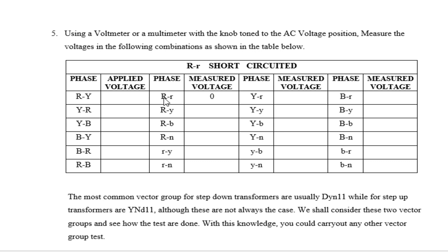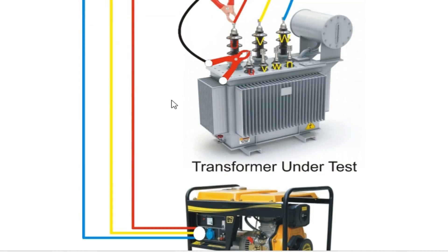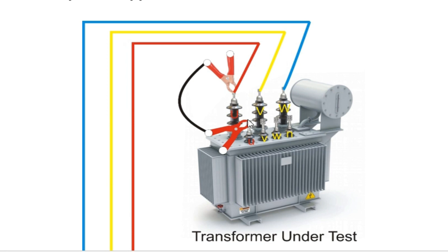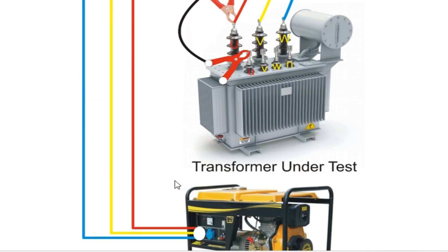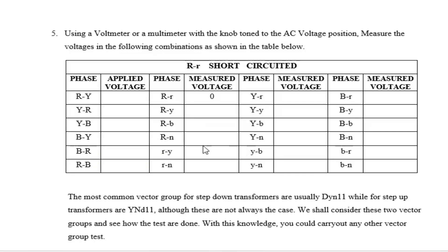Note that capital R and small r have been shunted together. If you measure the voltage across those two terminals, it should give you zero. If it doesn't give zero, there is a problem somewhere. Then measure R-r, R-y, R-b, Y-r, Y-y, Y-b, B-r, B-y, B-b — place your multimeter terminals on each pair and record all readings.